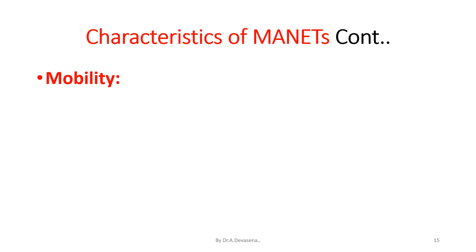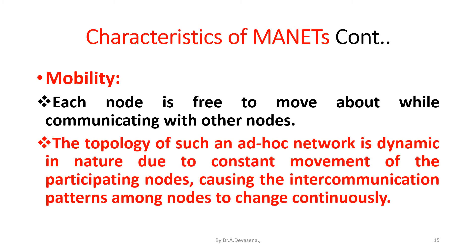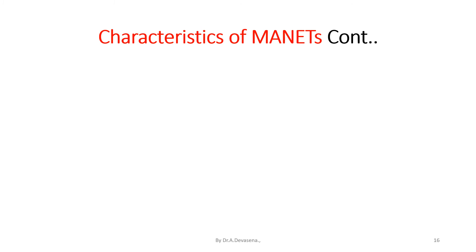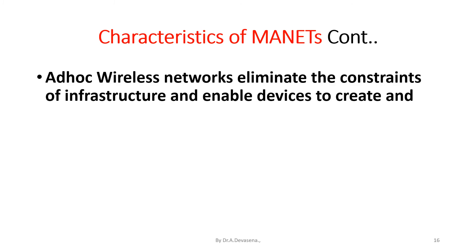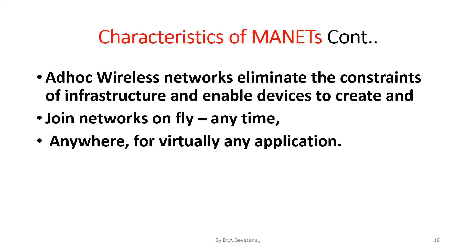The mobility characteristic: each node is free to move about while communicating with other nodes. The topology of such an ad hoc network is dynamic in nature due to constant movement of the participating nodes, causing intercommunication patterns among nodes to change continuously. Ad hoc wireless networks eliminate the constraints of infrastructure and enable devices to create and join networks on the fly — anytime, anywhere, for virtually any application.